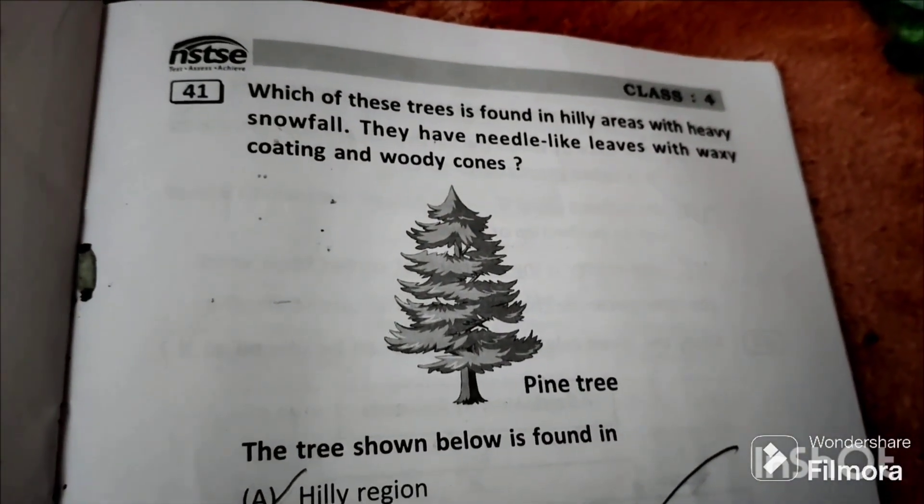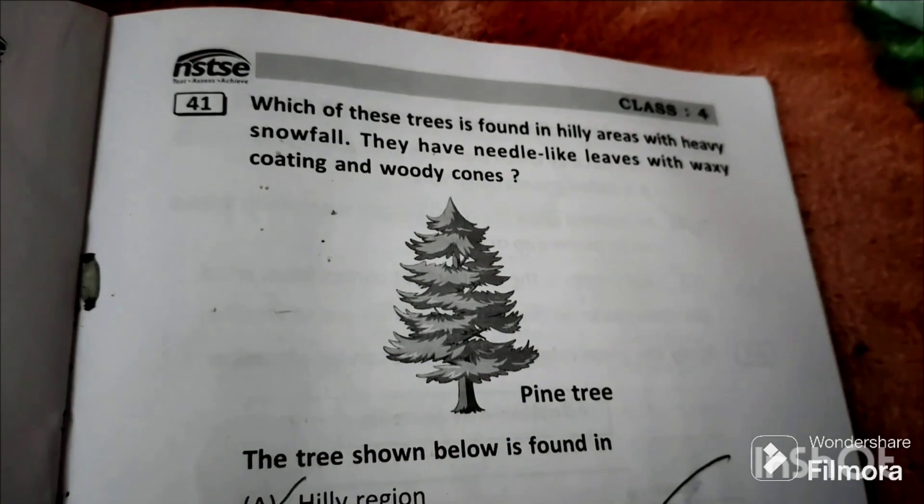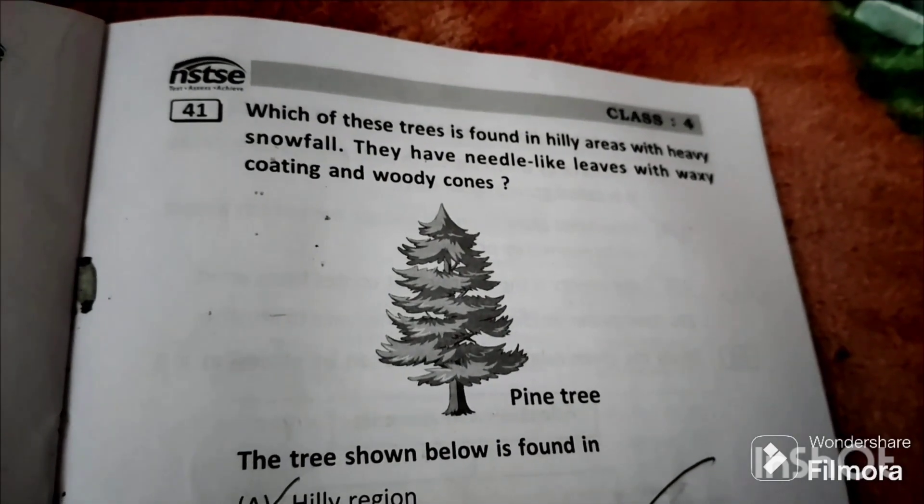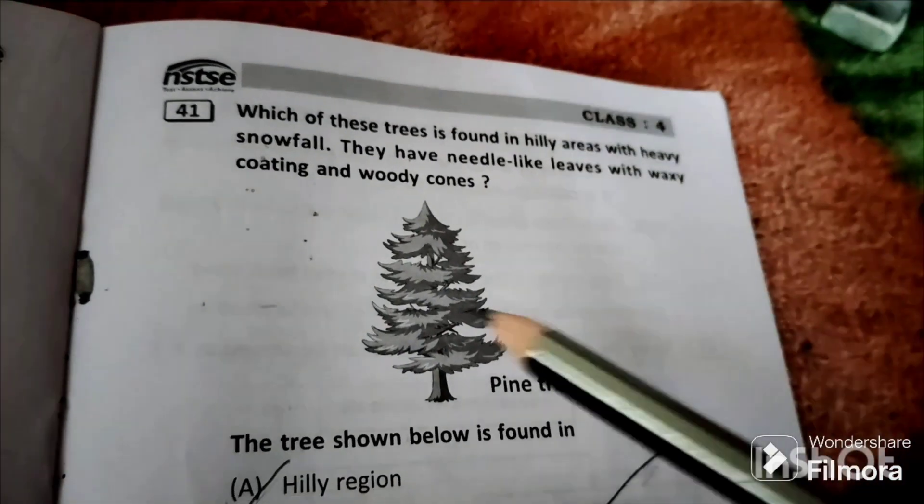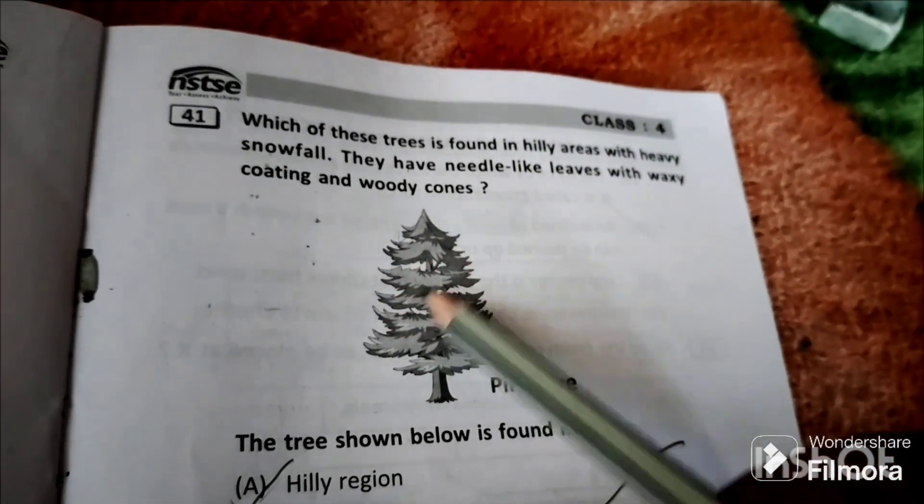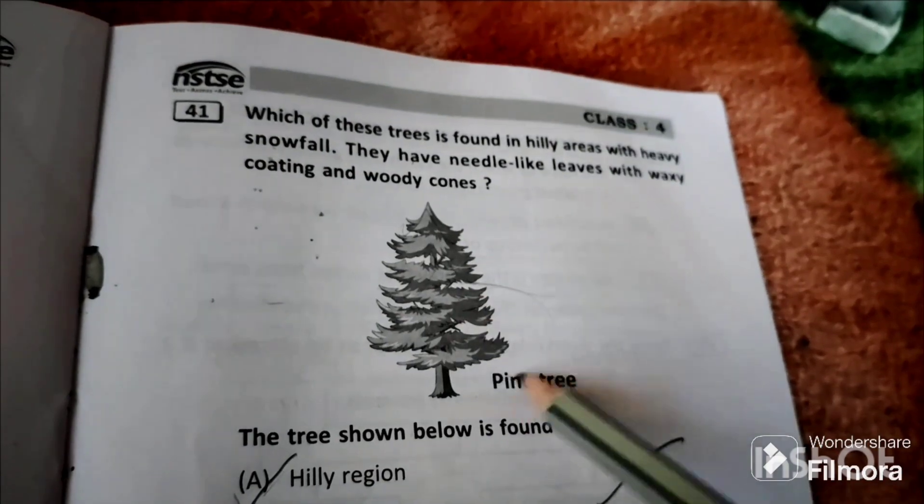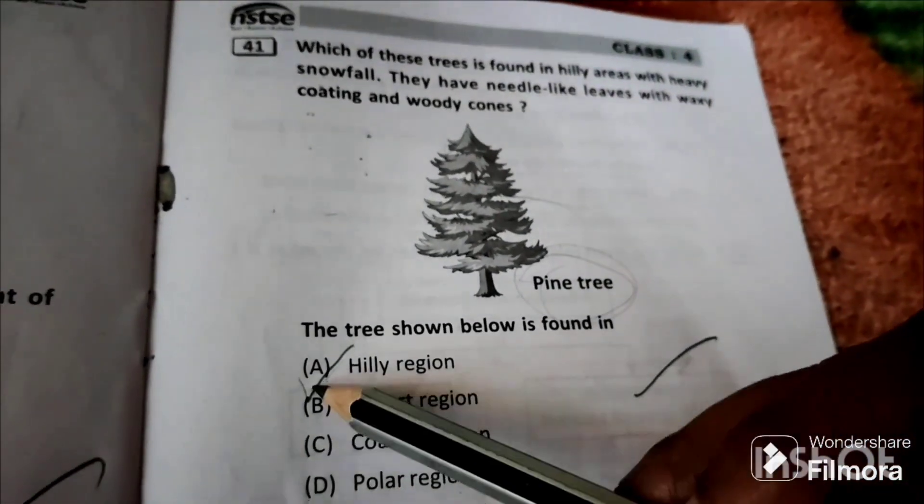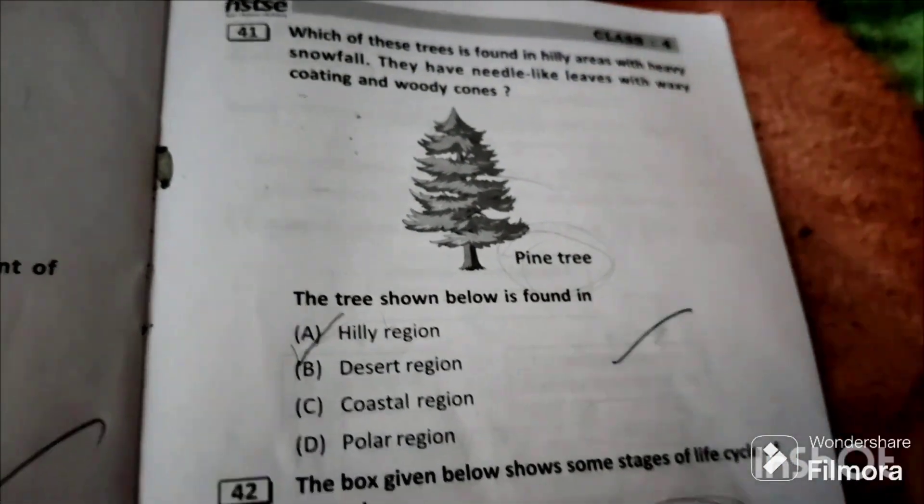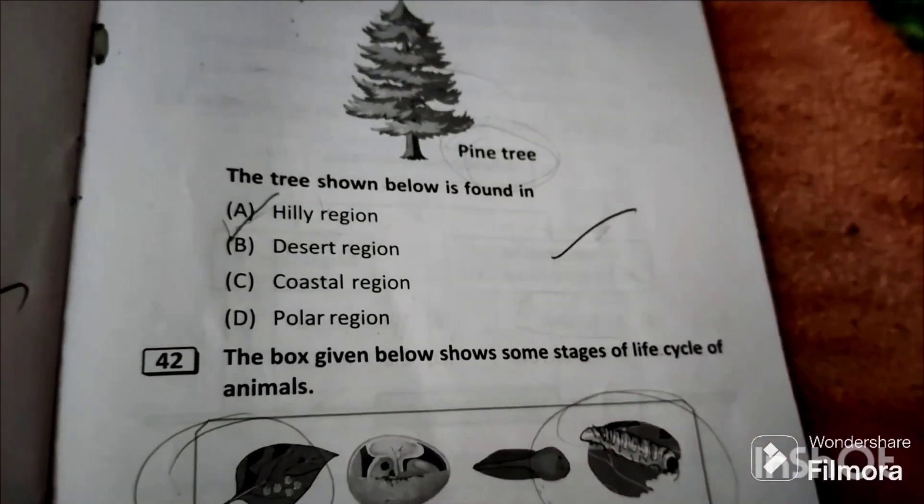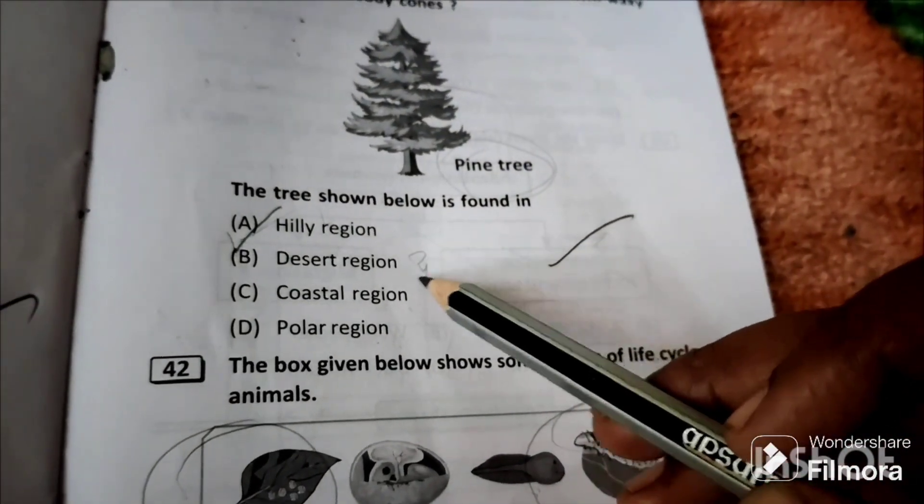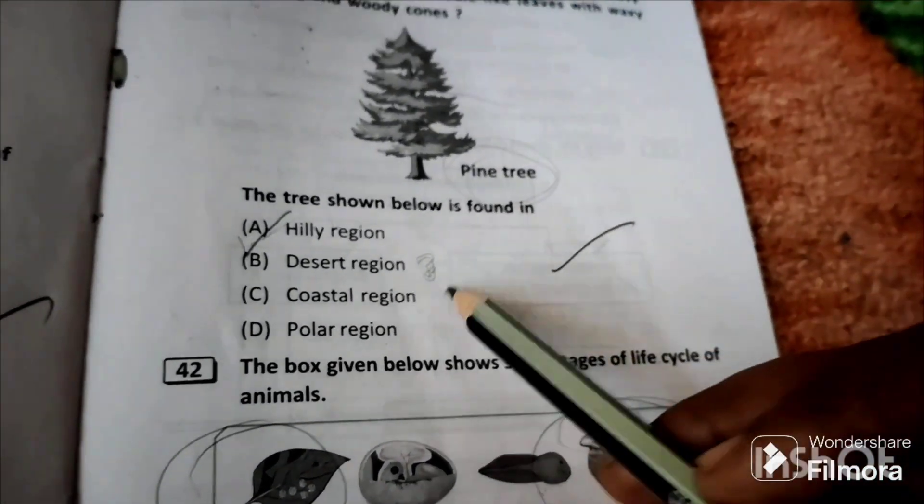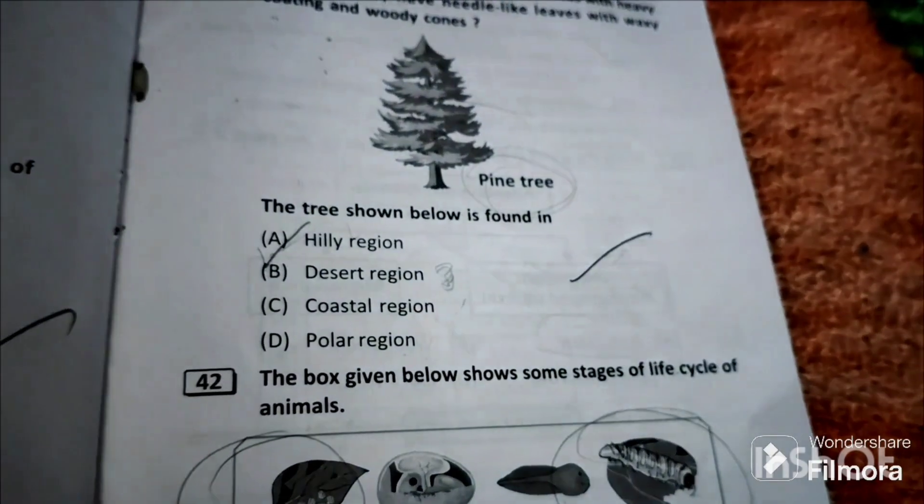Question 41: Which of these trees is found in hilly areas with heavy snowfall? They have needle-like leaves with waxy coating and wooden cones. This is in cone shape. This is coniferous, like pine tree, which is found in hilly region. So option A is the answer. Spines and cactus will be found in desert region, and coconut and palms will be found in coastal region.